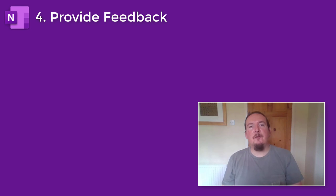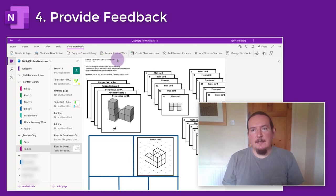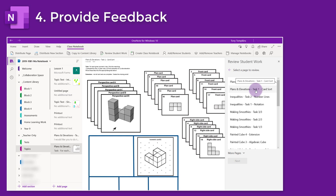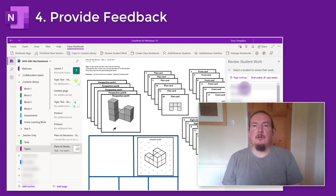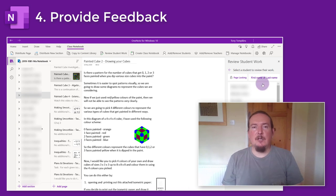Once students have done their work you'll want to review it and maybe provide feedback. Let's have a look at the Review Student Work button on the class notebook ribbon — this is a great tool which allows you to quickly go through students' work on a particular task. Tap the button and you'll get a side panel which you can use to drill down on the section and the specific page you want to view. OneNote groups together all pages it can find in each student's notebook that share the same name. The list is automatically arranged alphabetically by surname, with a toggle to rearrange by first name if you wish.